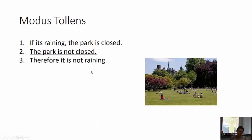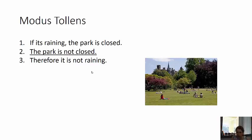How about this one? If it's raining, the park is closed. The park is not closed, therefore it is not raining. This is an example of modus tollens: if P then Q, not Q, not P. And again, it's valid.